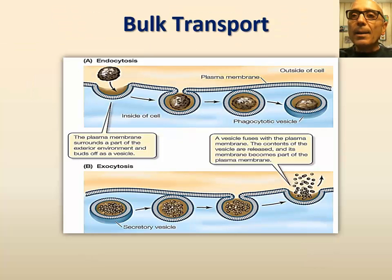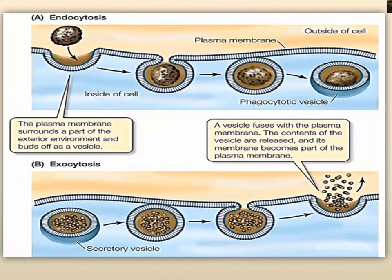A third type of active transport is known as bulk transport of substances. It involves exocytosis and endocytosis via vesicles. Transporting substances in bulk using vesicles requires the expenditure of energy as ATP. Most hormones are transported to the plasma membrane by bulk transport and secreted by cells into the bloodstream through the process of exocytosis.